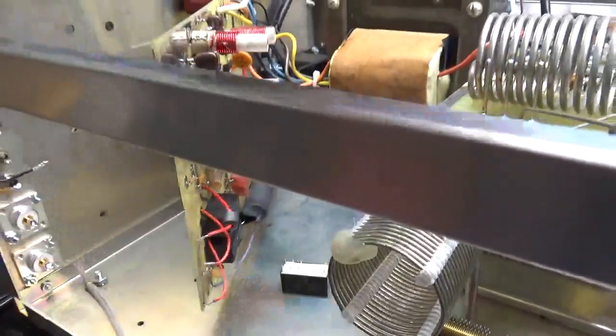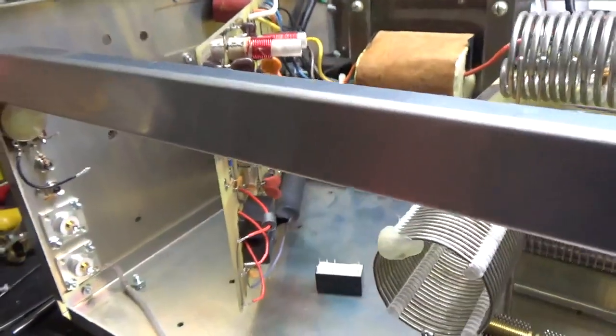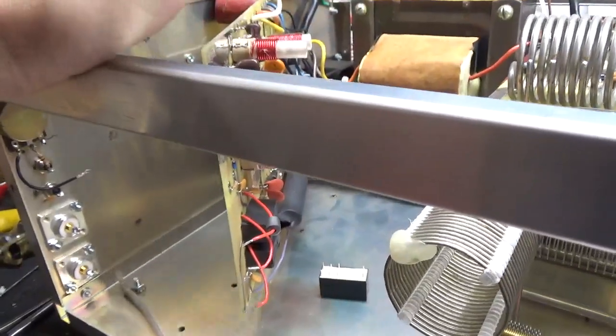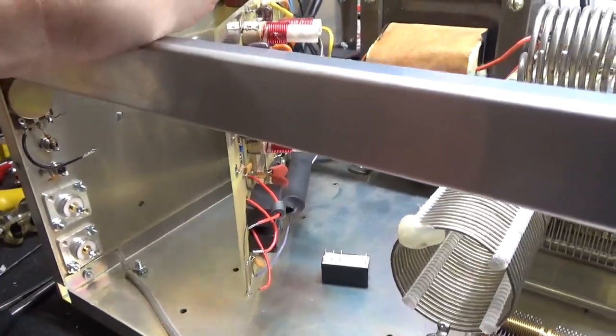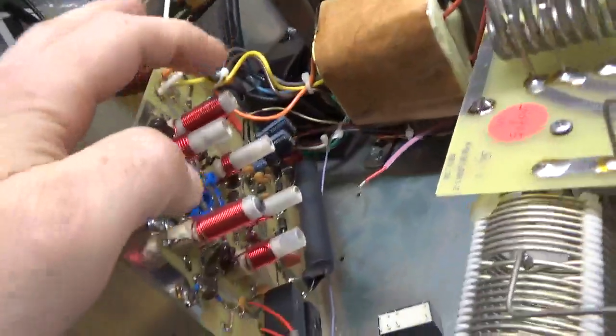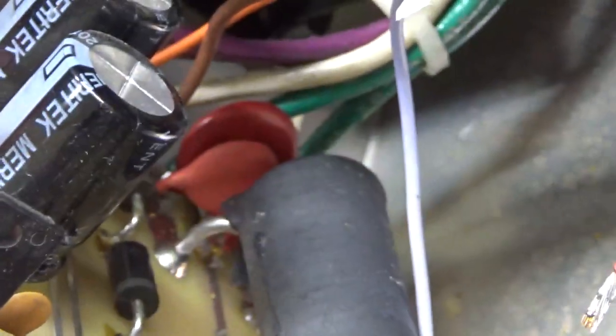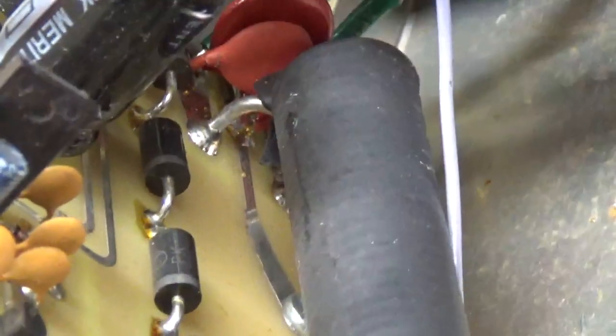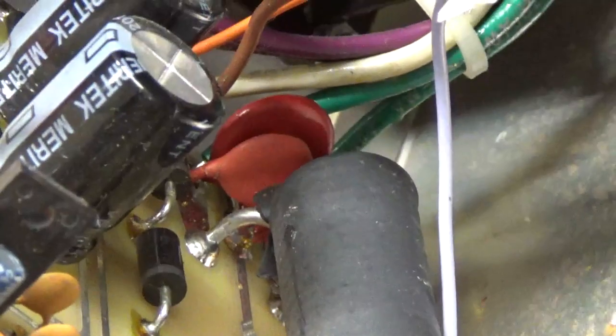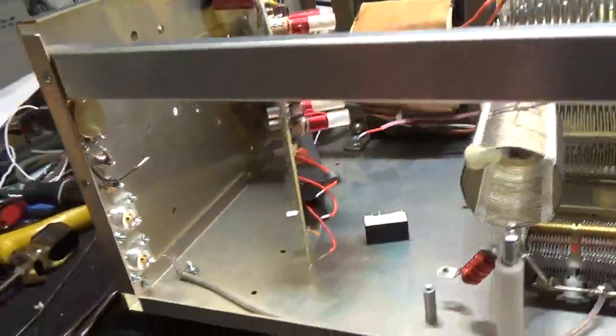So since I have the whole tube assembly out and I'll be adding the gas discharge tubes, the MOVs can come out. They're over there on the other side of the filament choke. Not the small red ones, but the darker red ones. They're no longer needed with the gas discharge tubes.